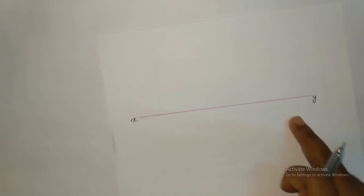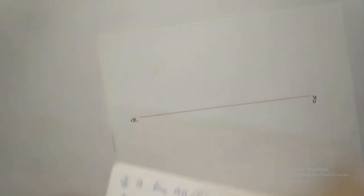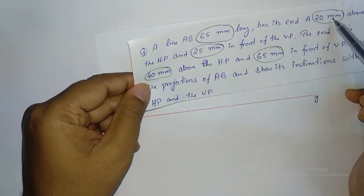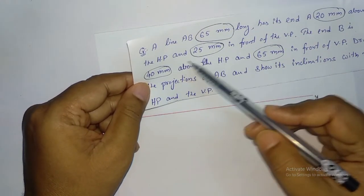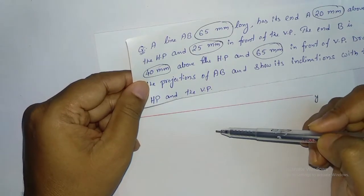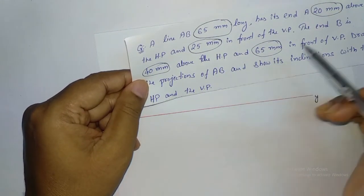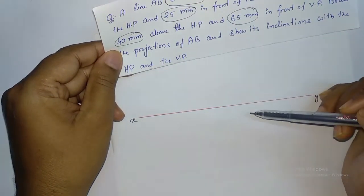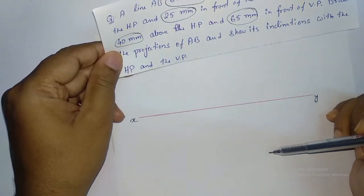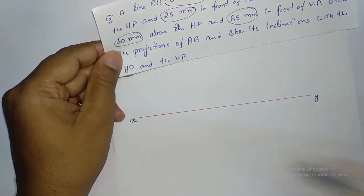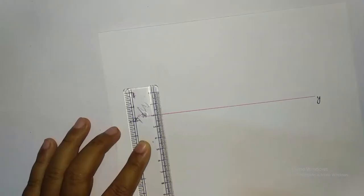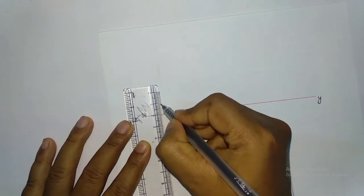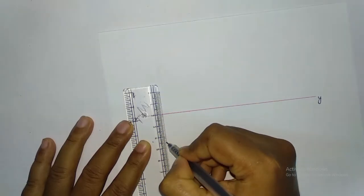First of all, I have drawn the reference line XY. After that, I am going to draw two points: one is 20 mm above XY and another is 25 mm below XY. So these are point A. On the right-hand side, I am going to mark 40 mm and 65 mm, and draw the locus. This is 20 mm and this is 25 mm.